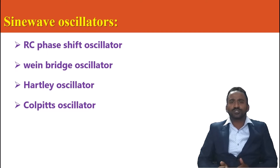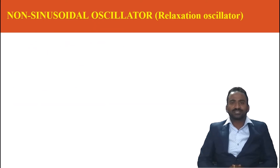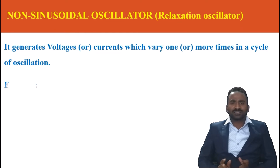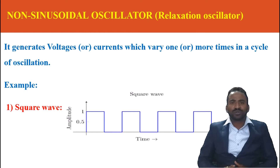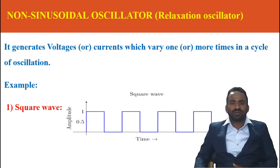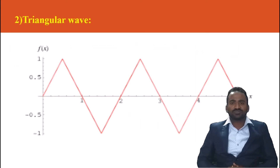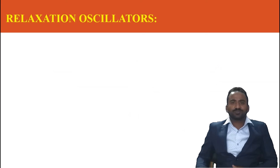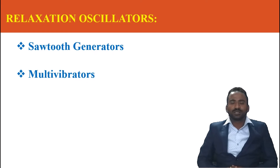All these oscillators produce the output in the shape of a sine wave. Now let us look into the relaxation oscillator, which means non-sinusoidal oscillator. It is an electronic device which produces the output in the shape of square, triangular, rectangular, or sawtooth waves — it can generate voltages and currents which may vary one or more times in a cycle of oscillation. The figure shows a square wave and a triangular wave, each varying with time. The examples of relaxation oscillators are the sawtooth generator and multivibrators.